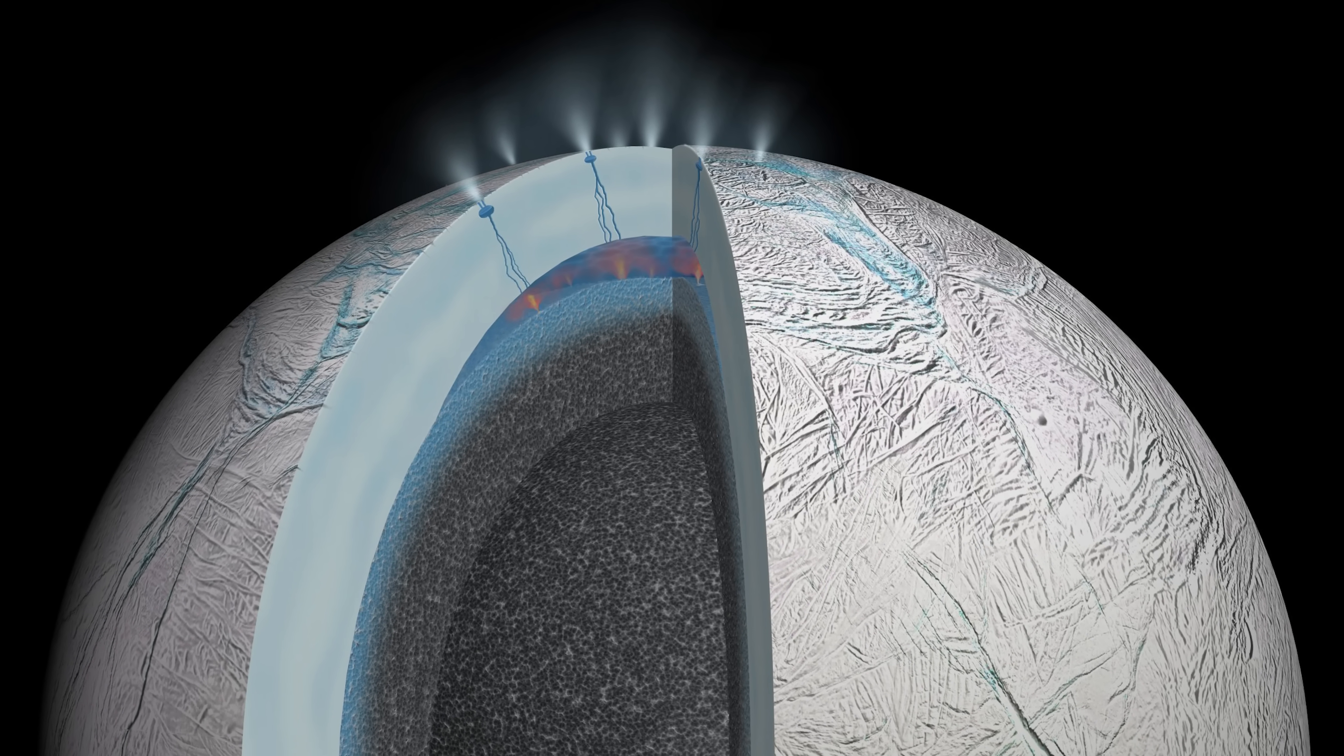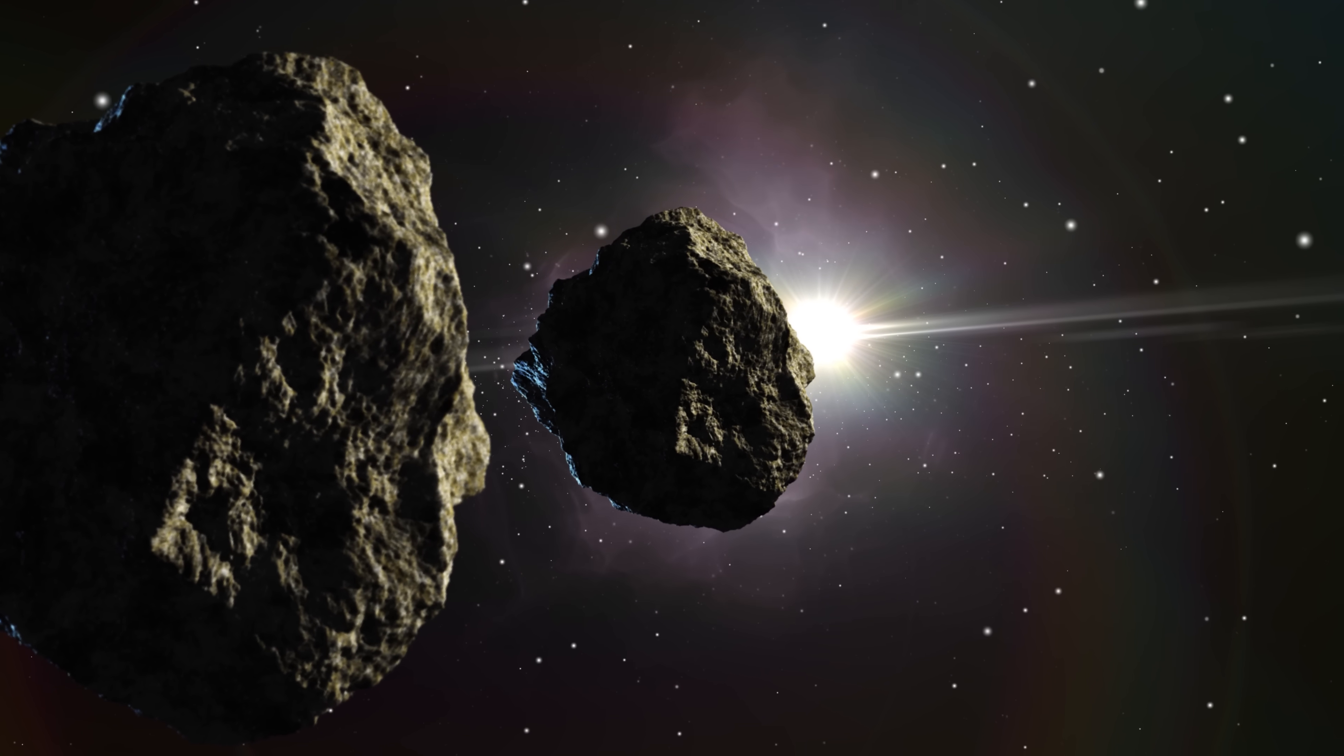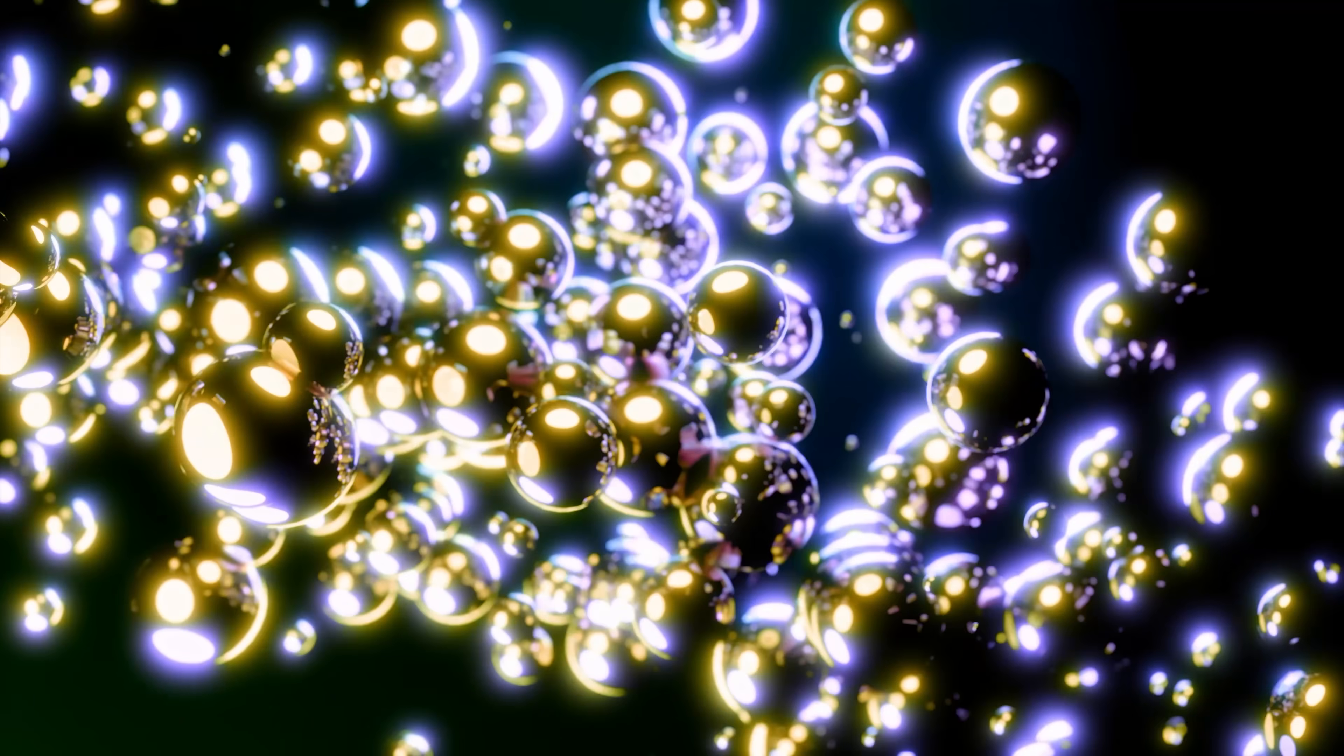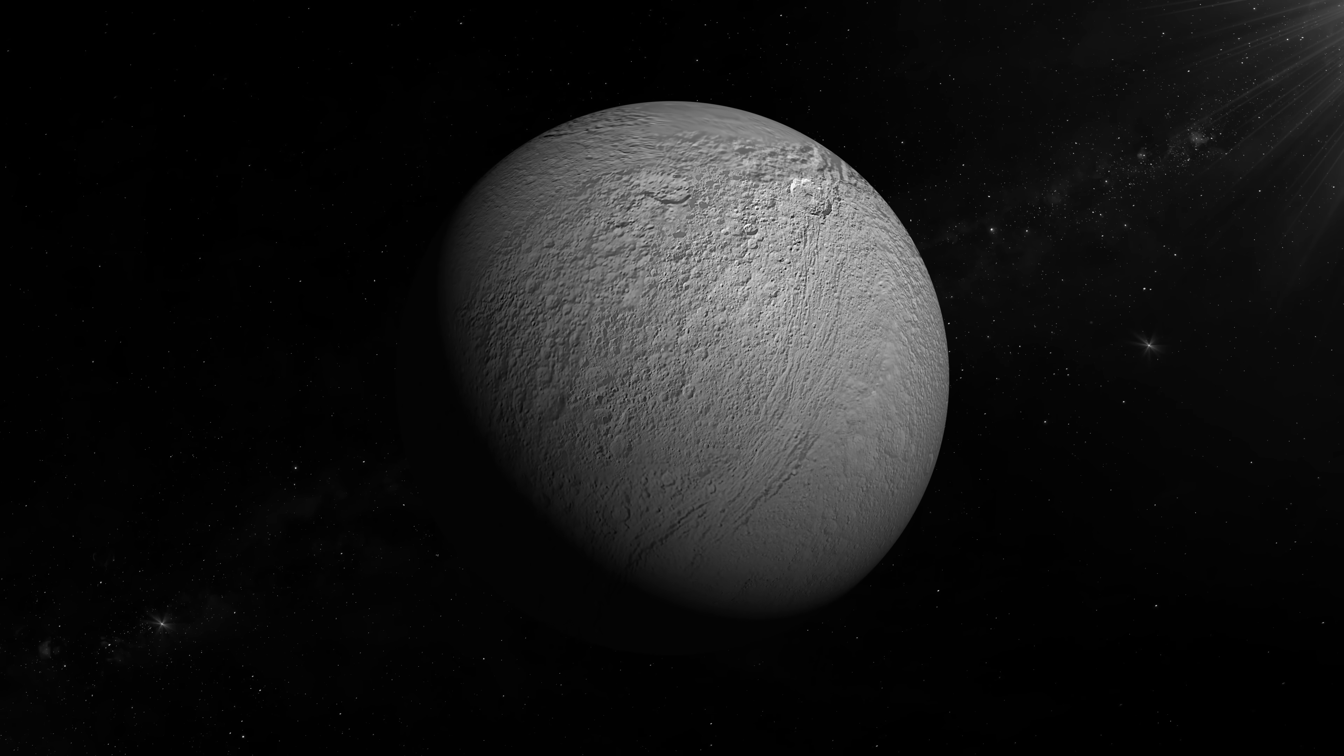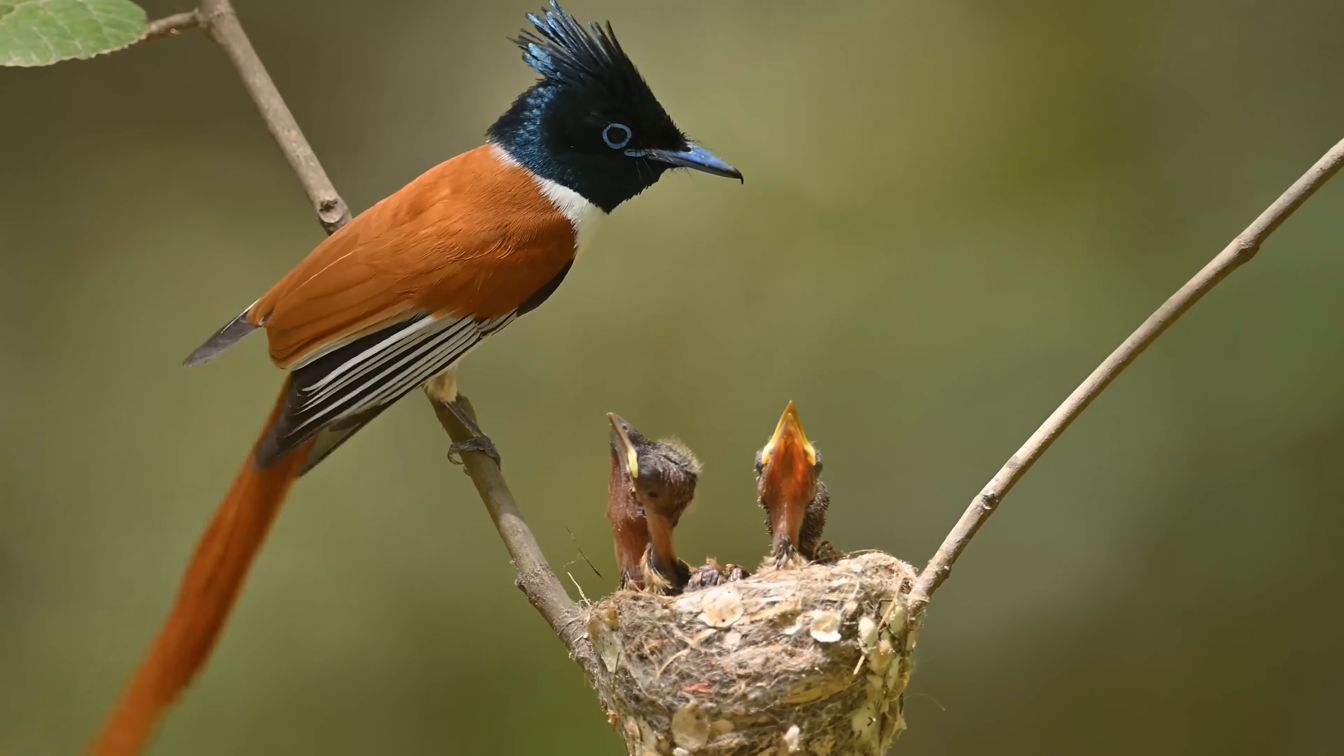Webb's data suggests Enceladus's vents might be even more efficient at brewing life's ingredients. As Dr. Christopher Glein of SWRI put it, we're looking at a cosmic chemistry set that's been running for a billion years. Webb found these same organic molecules in places even less hospitable: in asteroid belts where radiation should destroy them, on rogue planets floating alone in interstellar space, in protoplanetary disks around stars too young for planets. This means the ingredients for life might be universally common, but the real mystery is why we don't see more actual aliens.